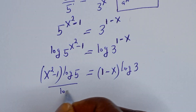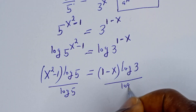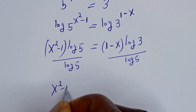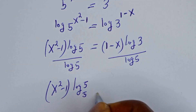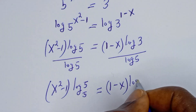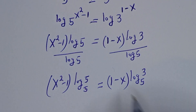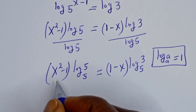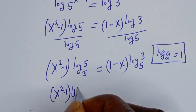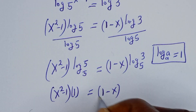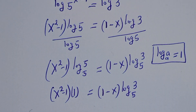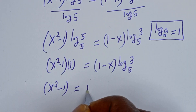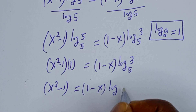Now let's divide both sides by log 5. This gives us s squared minus 1 times log base 5 of 5 is equal to 1 minus s times log base 5 of 3. We know that log base a of a equals 1, so this simplifies to s squared minus 1 equals 1 minus s times log base 5 of 3.